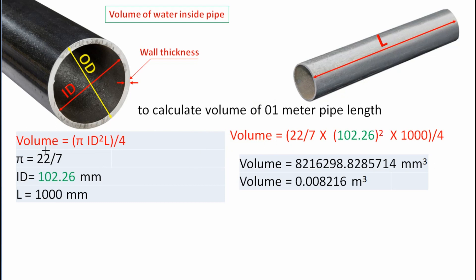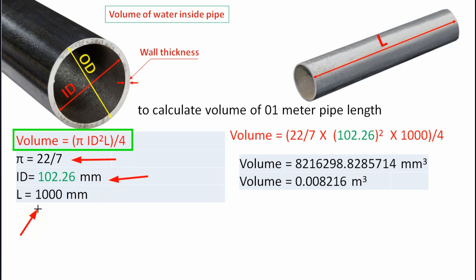To calculate the volume of water inside the pipe, we use the formula: volume equal to pi into pipe inside diameter squared into pipe length divided by 4. Pi is a constant with value 22/7. The pipe inside diameter is 102.26 mm and for our sample calculation, we assume pipe length equal to 1 meter or 1000 mm. Applying all values: volume = (22/7) × (102.26)² × 1000 / 4. After calculation, the volume of water inside the pipe for 1 meter length is equal to 0.008216 cubic meters.